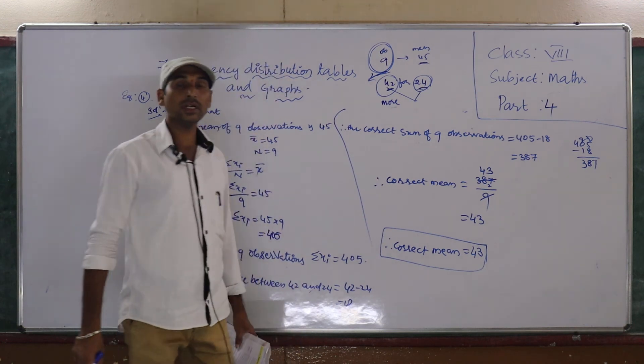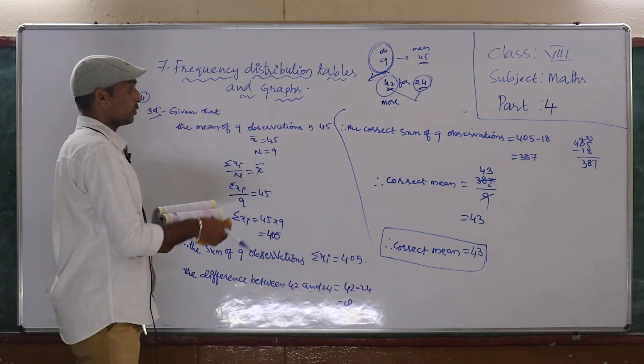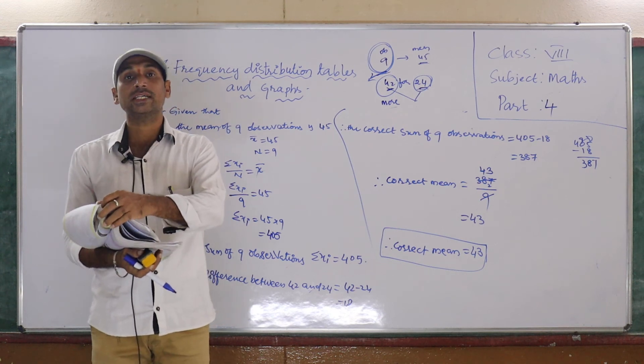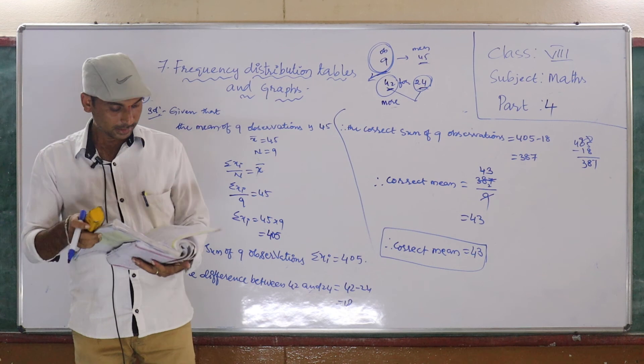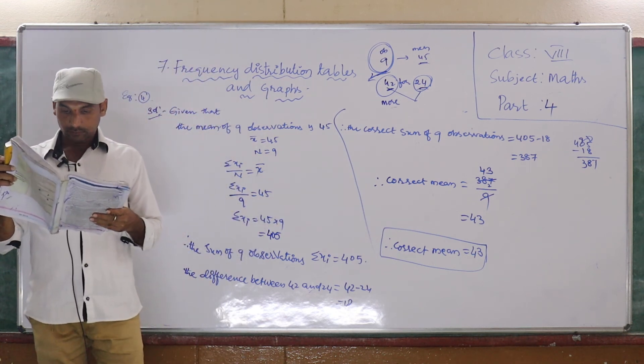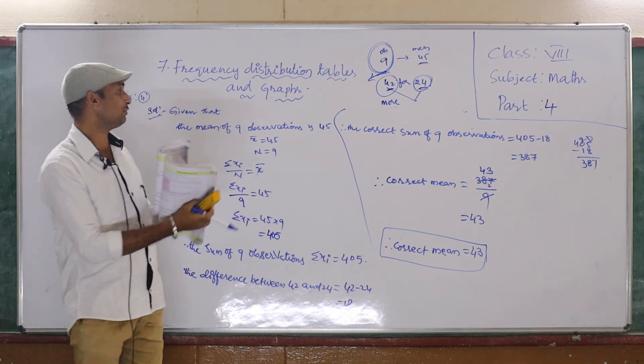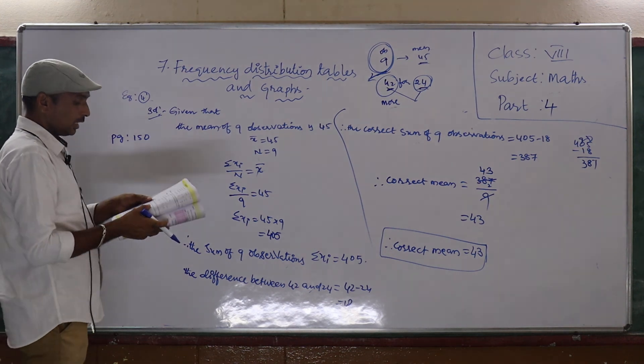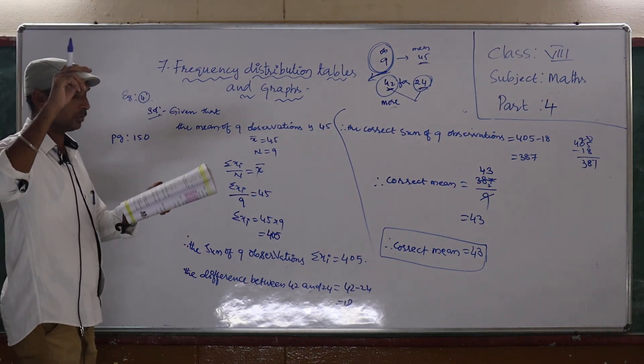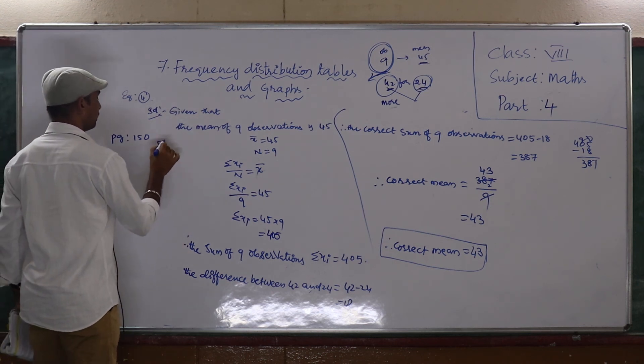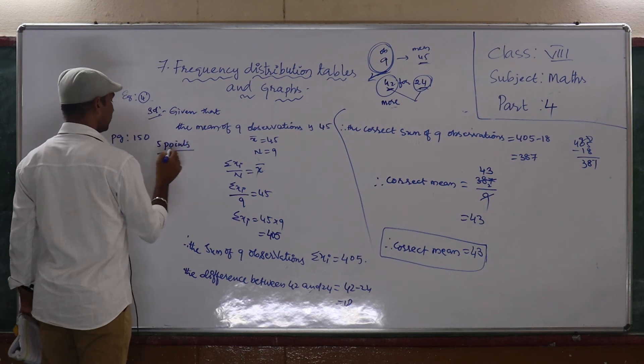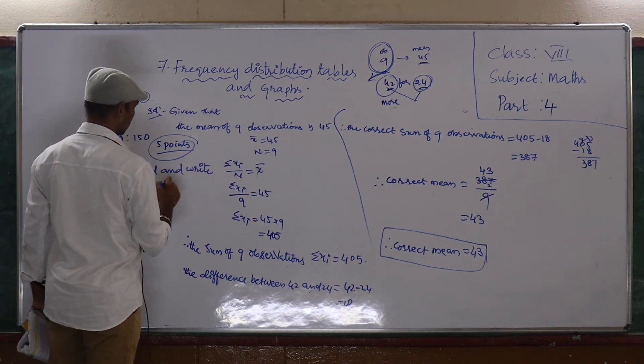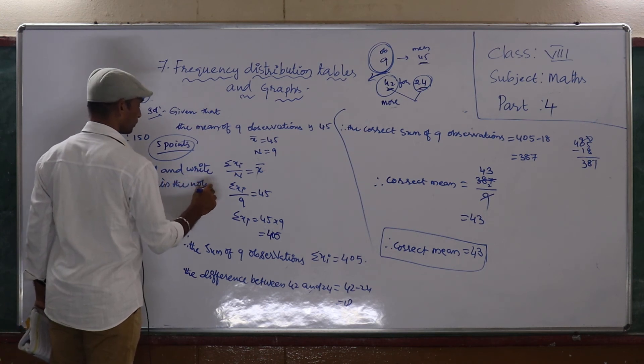So this is children, how to find out the mean of given data. This type of problem is very important. So here, the third problem, third example you do as homework. Then in page number 150, we observe 5 points. Just that 5 points you read and write in the notes.